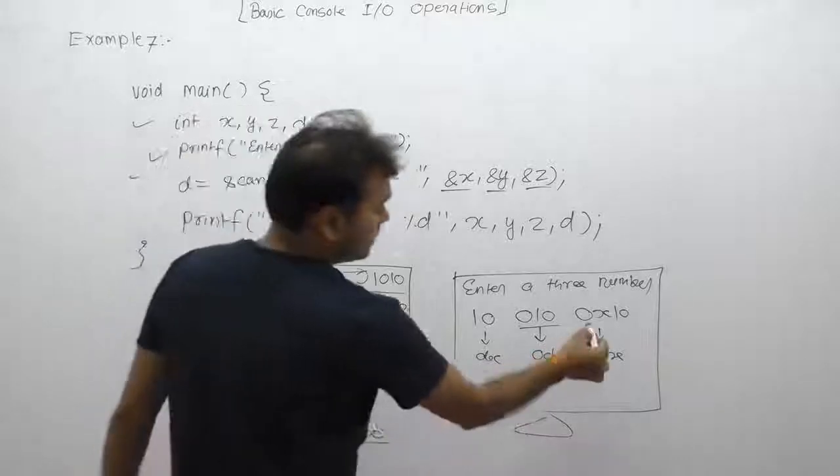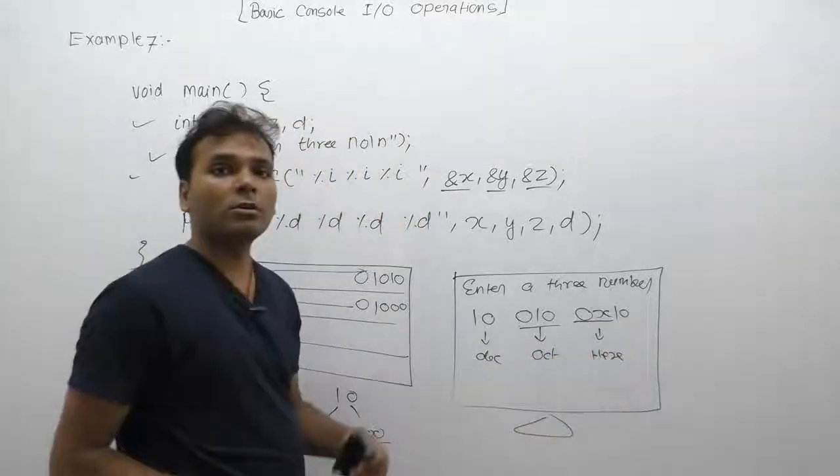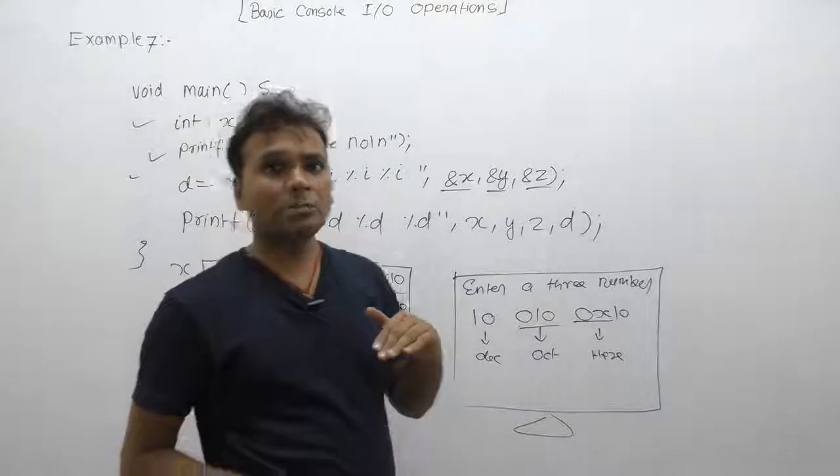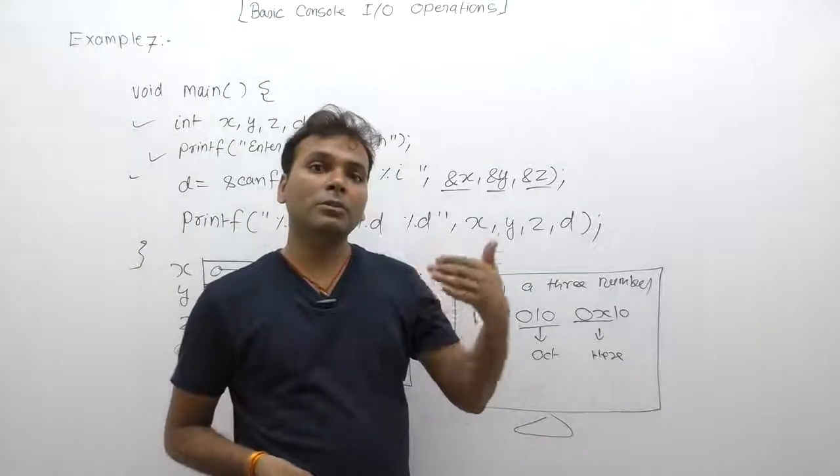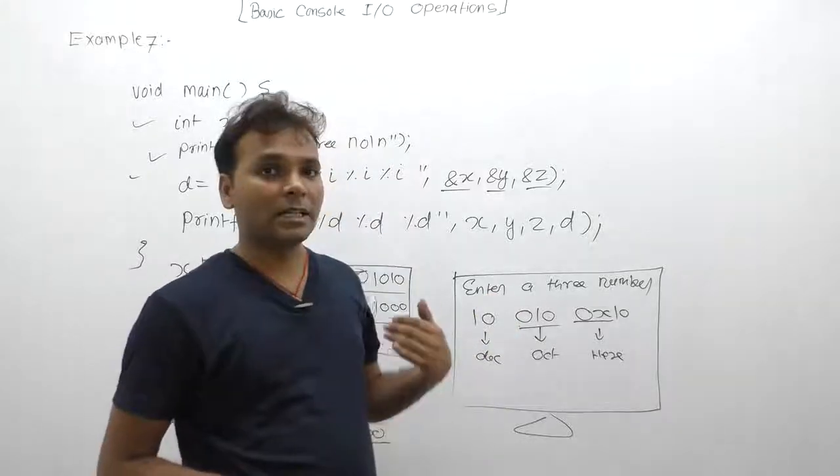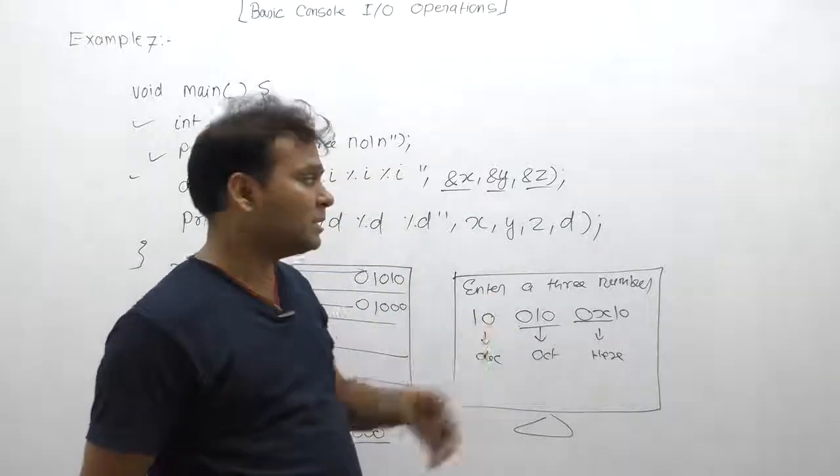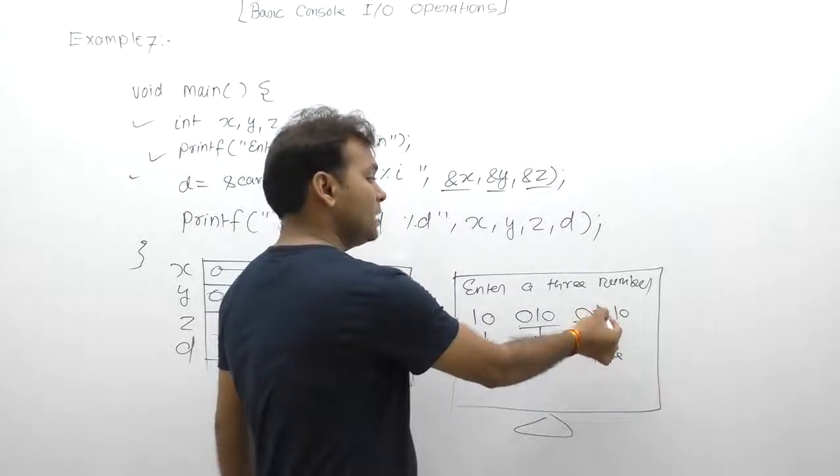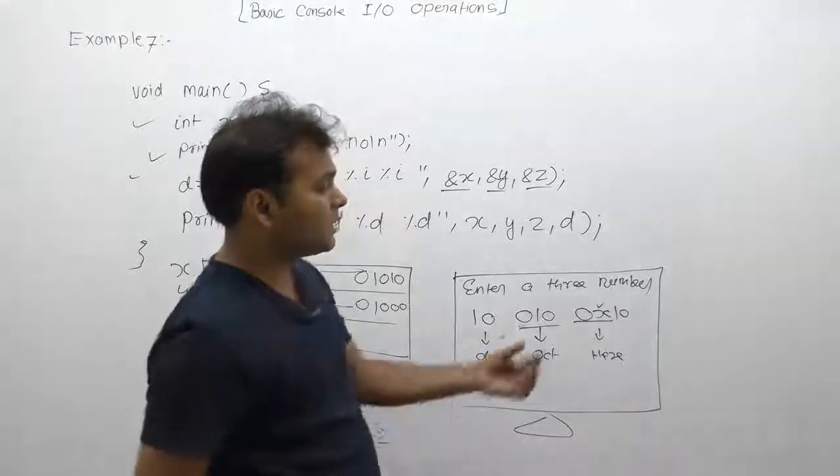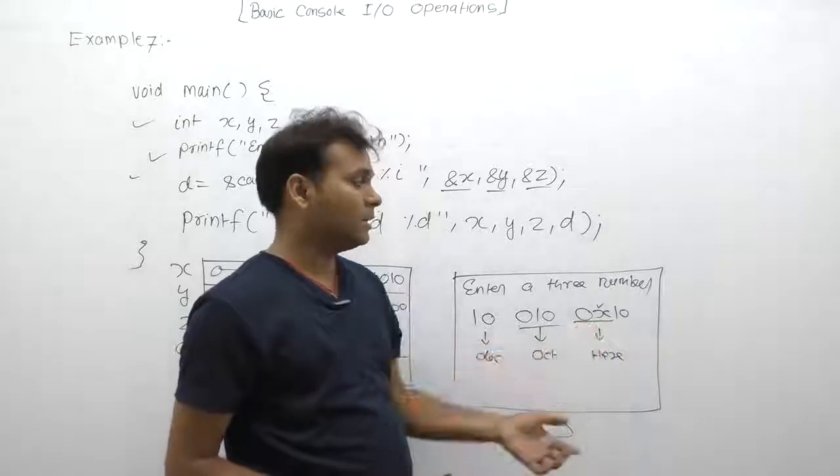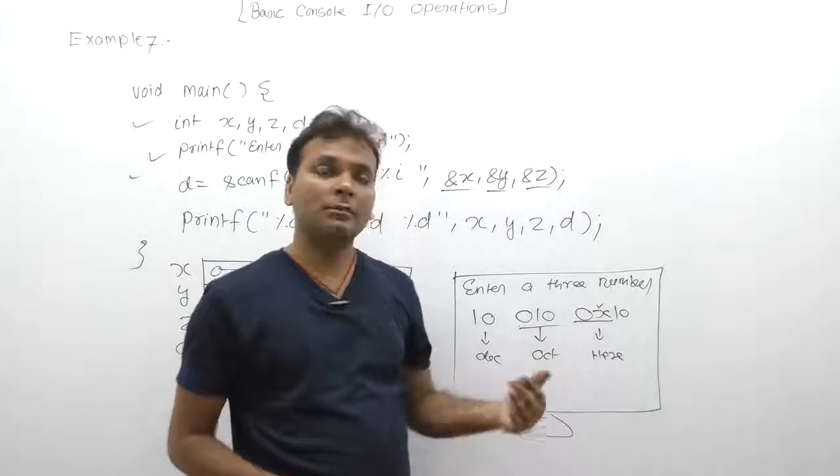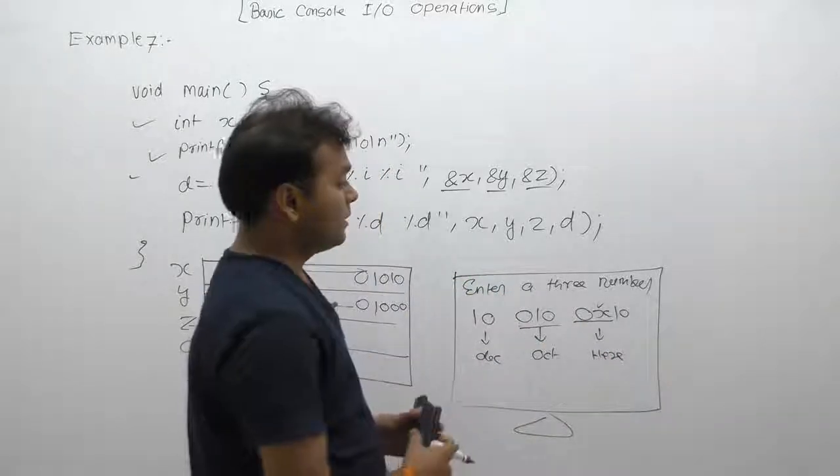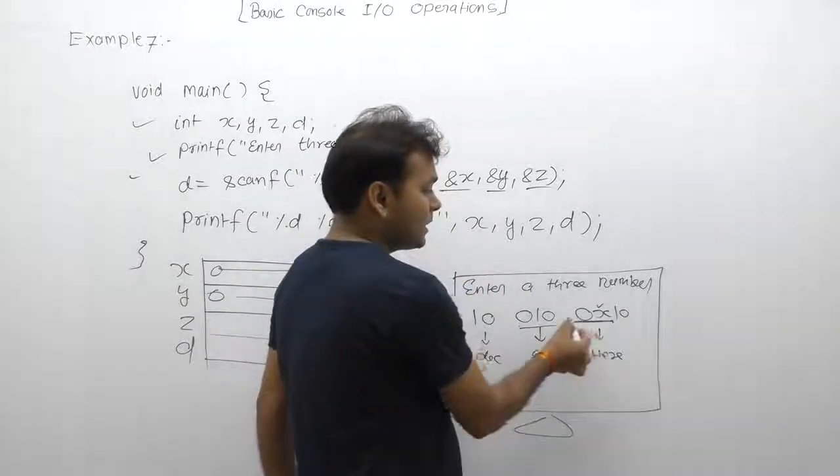This time value means 0x consider part of format because of this percent i. Because percent i stands for integer. Integer maybe octal, maybe decimal, maybe hexadecimal. Percent i input value in any number system read karna possible. Therefore here x is a valid character, whereas in previous case we saw octal or percent d case, same x was invalid. Means previous cases mein read ke baad tha only zero, but here it will read zero x is considered as a part of format.